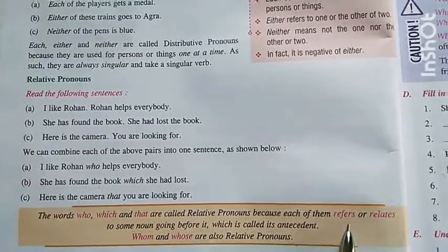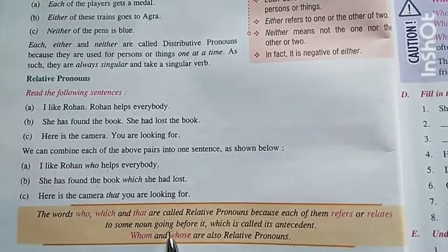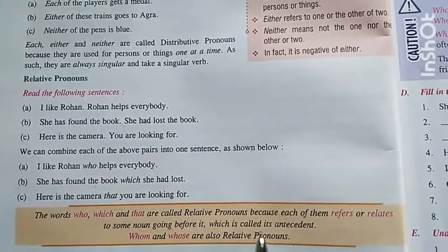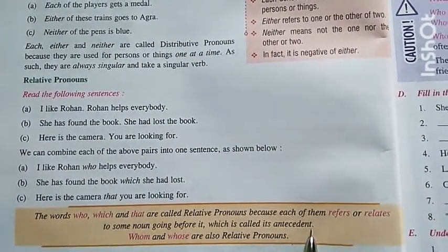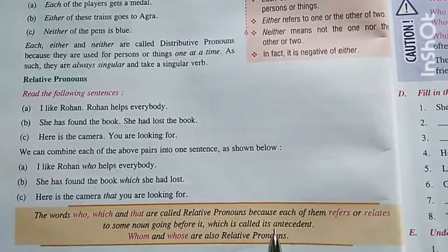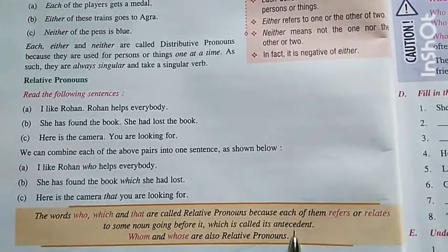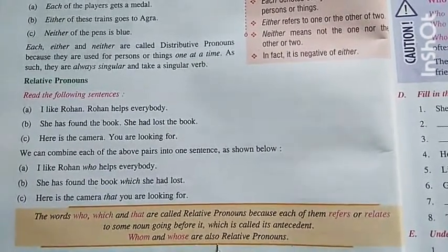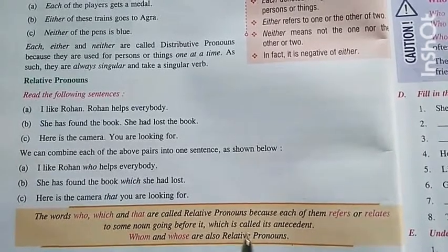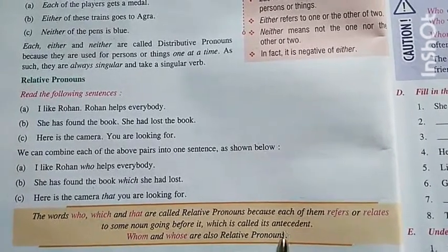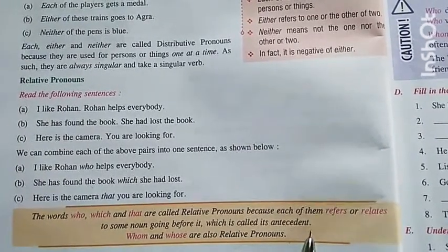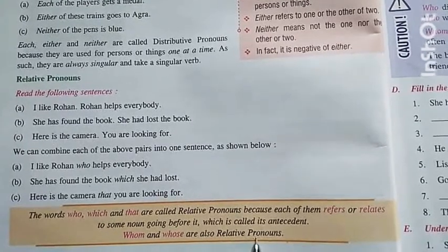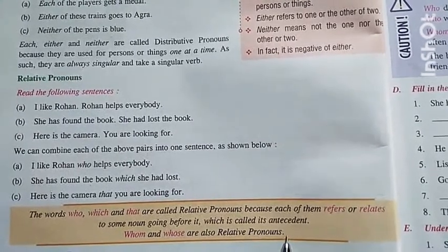Because each of them refers and relates to some noun going before it — यह noun को refer करते हैं. Which is called its antecedent. Antecedent, whom, and whose are also called relative pronouns — जो antecedent है, whom और whose को भी हम relative pronouns में ही count करते हैं.